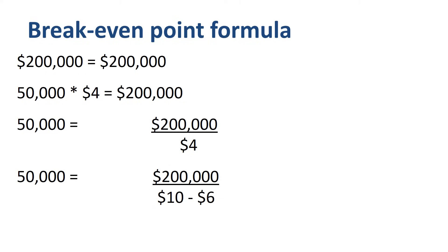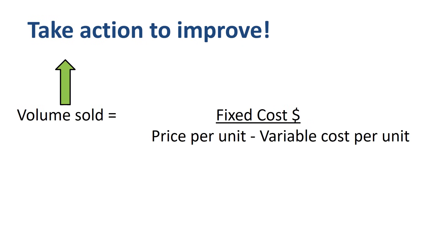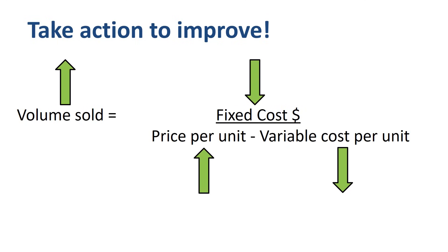That's all very interesting, but what should a business owner do with this information? The first thing that comes to mind is to try to sell as many units as possible — increase the volume sold. But that's not the only choice the business owner has. He or she can also work on reducing fixed costs, increasing the price per unit, or reducing the variable cost per unit. Work on all these variables at the same time, and the break-even point becomes dynamic instead of static.